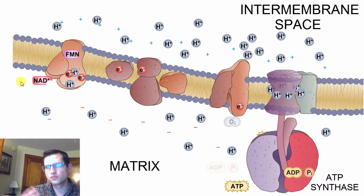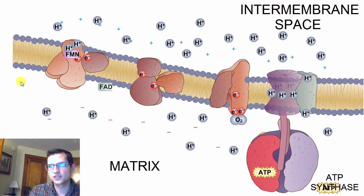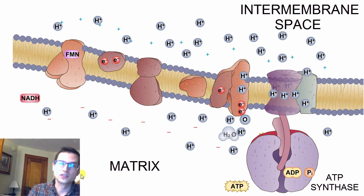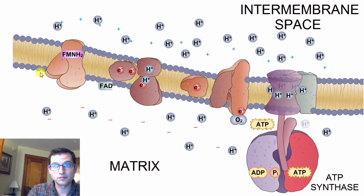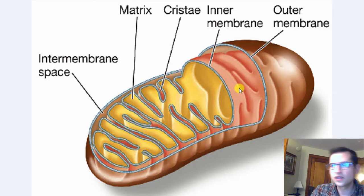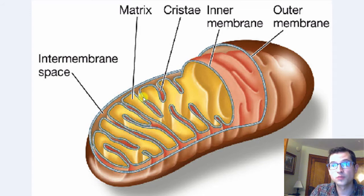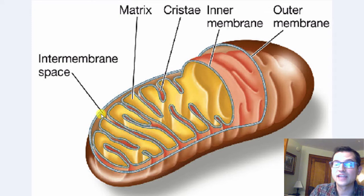Before we go any further, now is a really good time to orient ourselves to where all of this stuff is happening. This is the intermembrane space, this is the mitochondrial matrix, this is the inner mitochondrial membrane. Here we have a cartoon diagram of a mitochondrion, sliced so you can see inside. Here in brown on the outside is the outer mitochondrial membrane. This pinkish wrinkly membrane is the inner membrane — this is where the electron transport chain proteins and ATP synthase are embedded. Inside the volume of the inner membrane is the mitochondrial matrix, and outside the inner membrane between the two membranes is the intermembrane space.